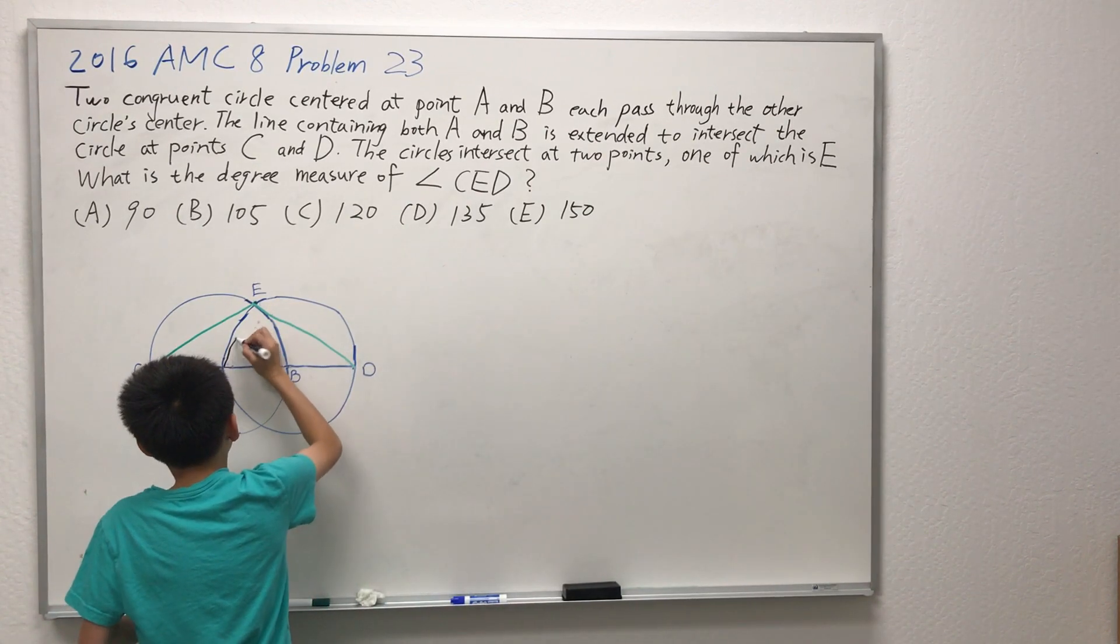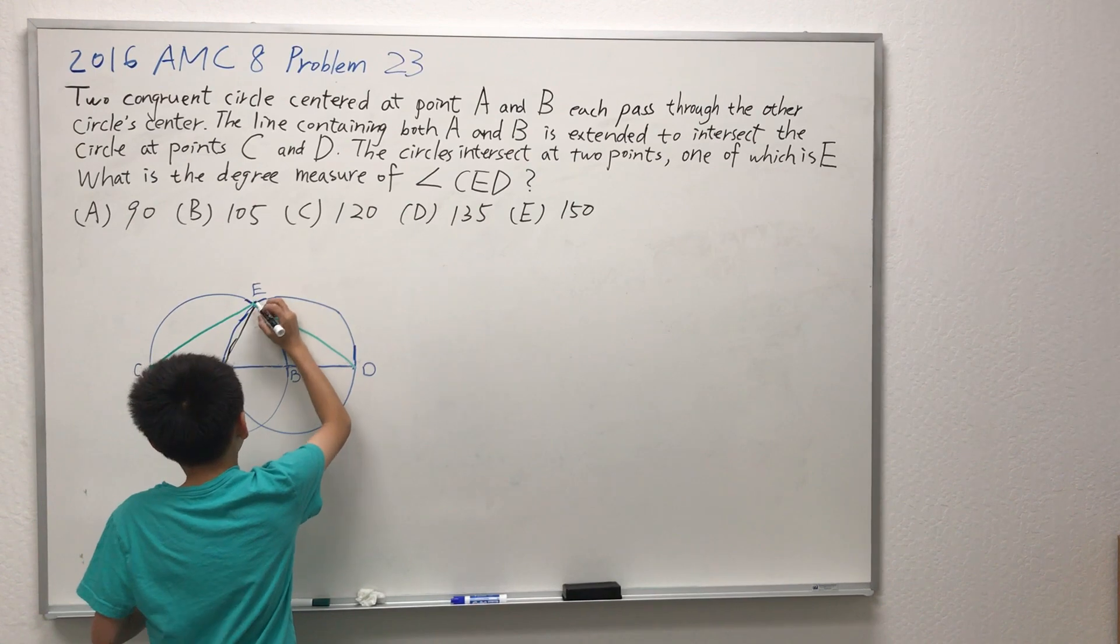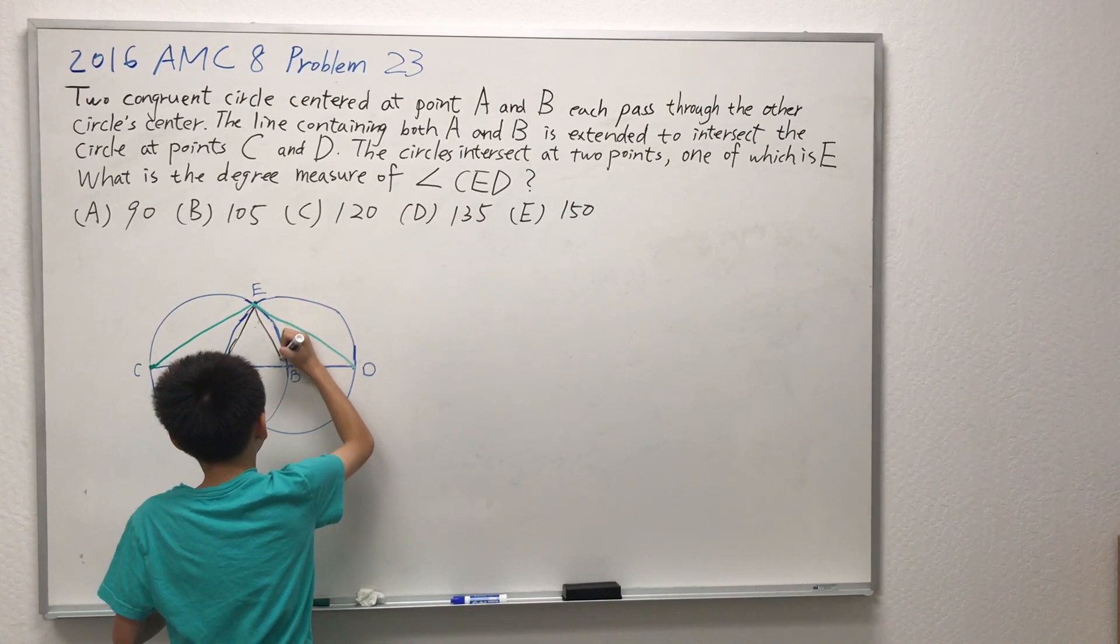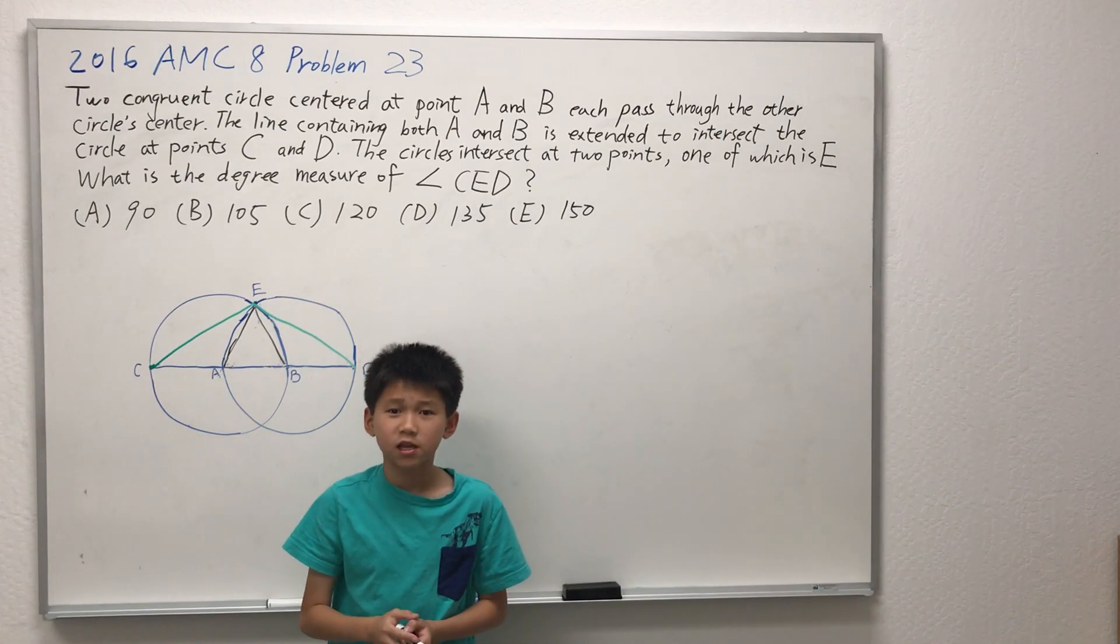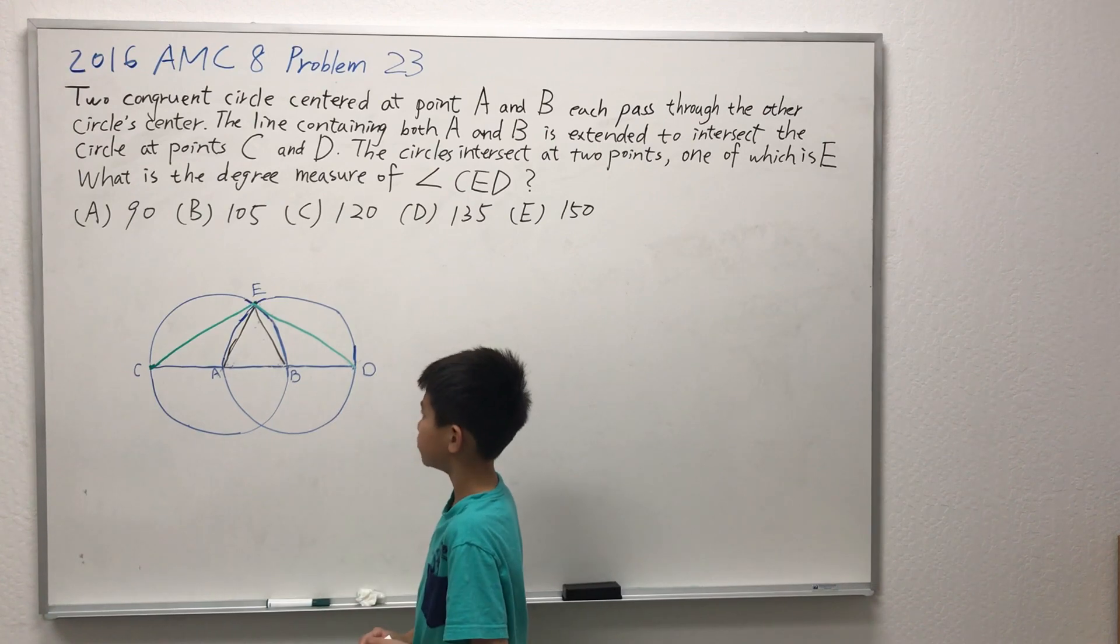Let's draw segment AE and line segment EB. Hmm, triangle AEB looks suspiciously like an equilateral triangle. So let's see if we can prove this.